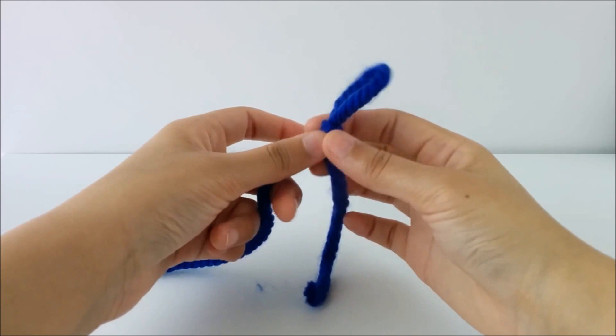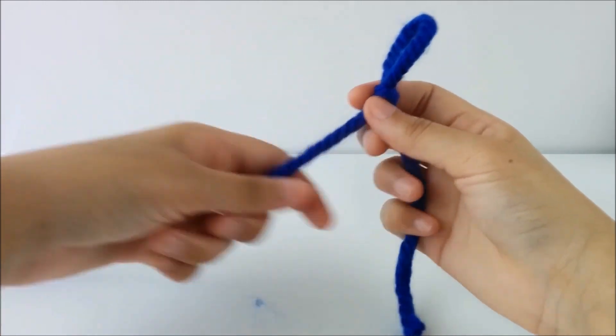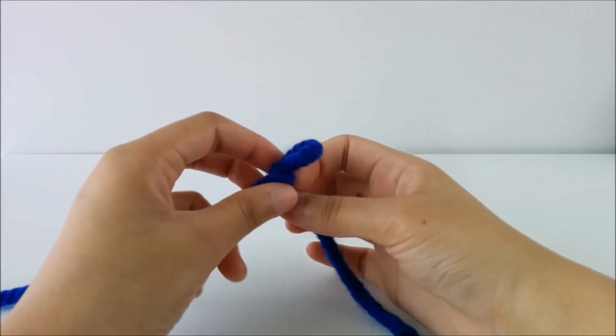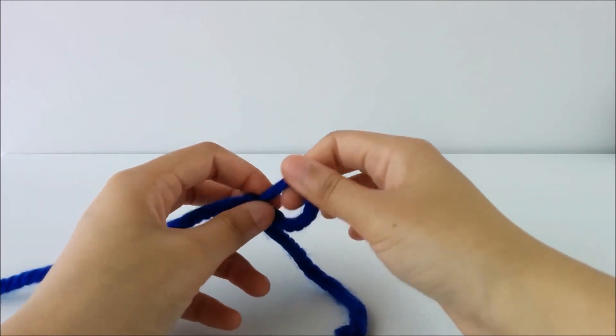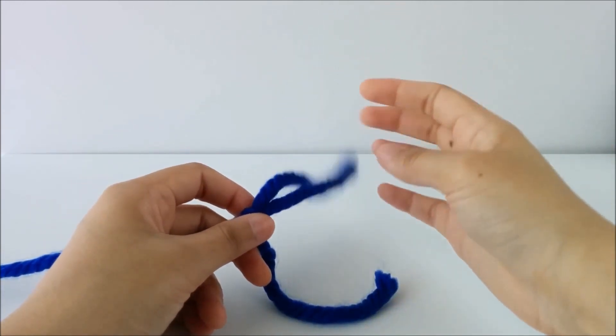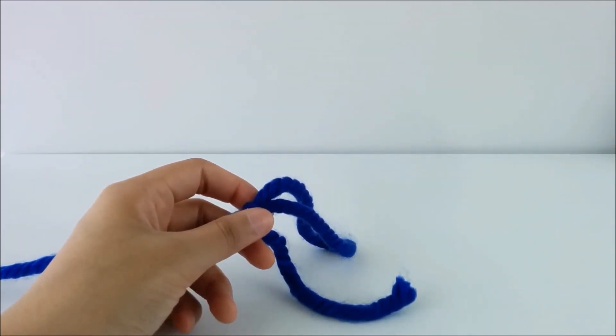Slip knots are great because if you tug on the working yarn right here, you can make the loop smaller. Or if you pull on the loop, you can make the loop larger. It's a really great way to start a project.